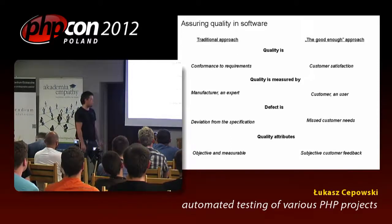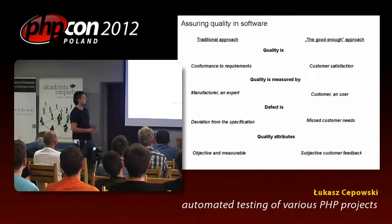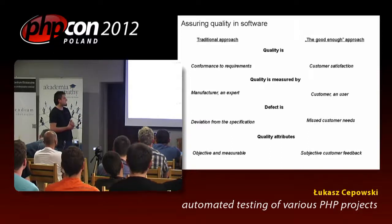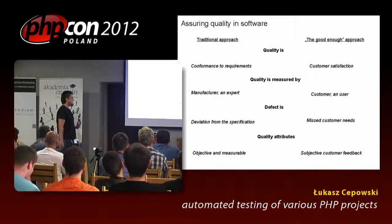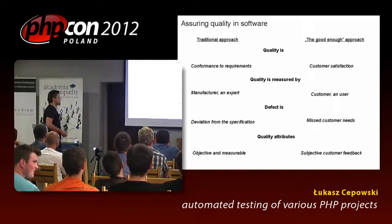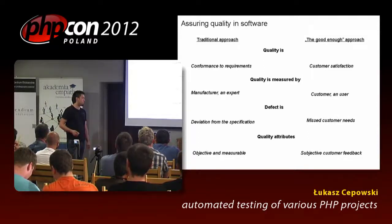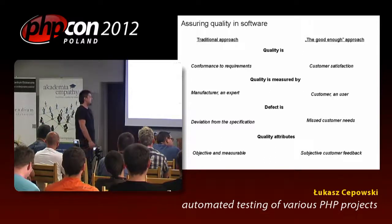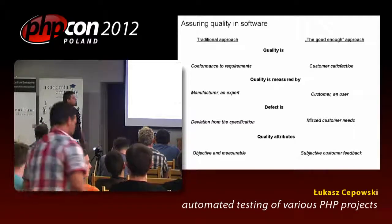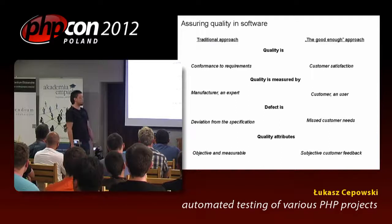There are two approaches to quality. The traditional approach says quality is conformance to requirements. We gather a list of requirements, build the software, and say it has high quality because it meets the requirements. A defect or bug is when something is not according to the specification. Quality is objective and measurable — you can count how many tests you have, what the coverage of your product is. Nowadays this approach has shifted a little into the 'good enough' approach.